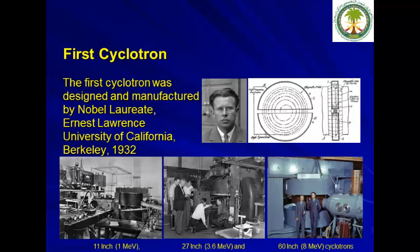The first cyclotron was designed by Nobel laureate Ernest Lawrence from the University of California Berkeley in 1932. The first cyclotron was 1 MeV with an 11-inch diameter. They progressed to 3.6 MeV, and finally manufactured an 8 MeV cyclotron, all back in the 1930s.